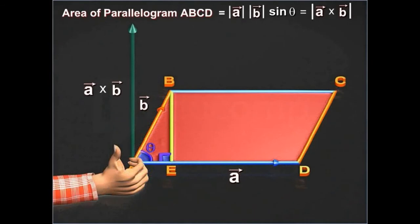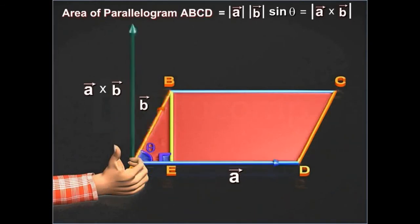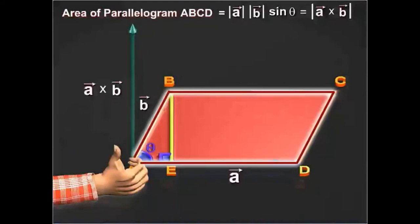Since vectors A, B, and A cross vector B form a right-handed system, vector A cross vector B is perpendicular to the plane of the parallelogram.